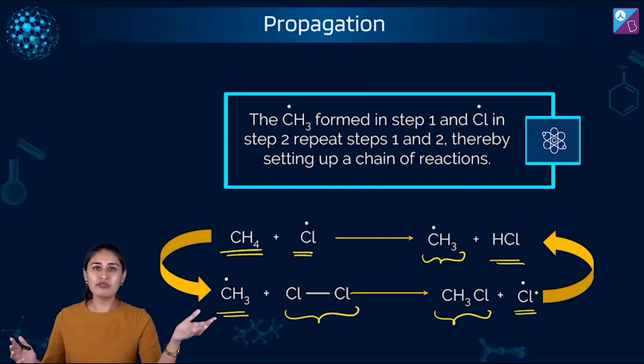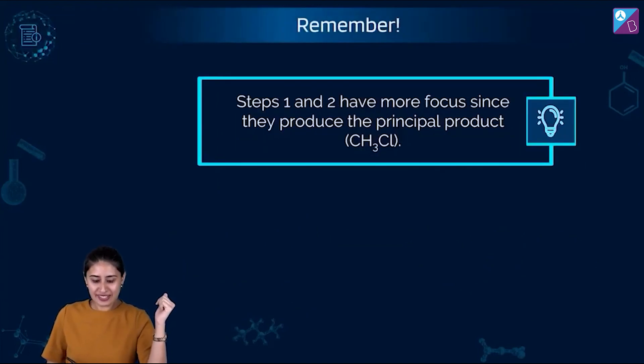Just like you know that one infected person can infect many others, this chlorine free radical is going to react with methane, produce alkyl free radical. This alkyl free radical, the healthiest of all, also got infected, can infect others, and this is ever going. This is like non-stop kind of a thing. Please understand step 1 and 2 have more focus since they produce the principal product CH3Cl.